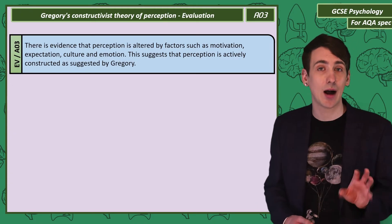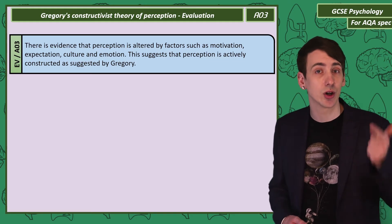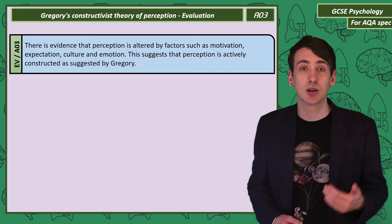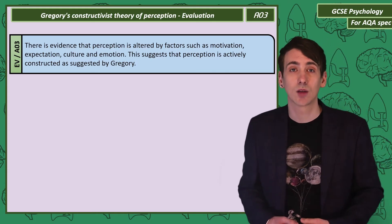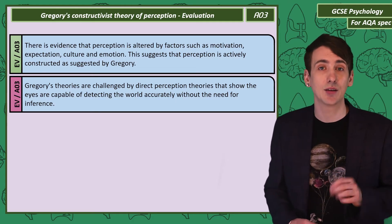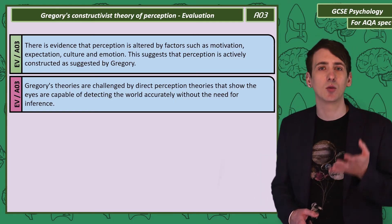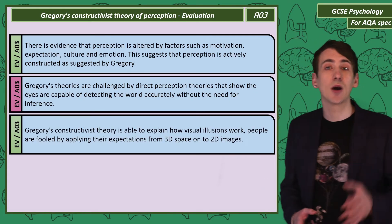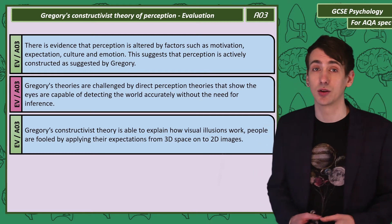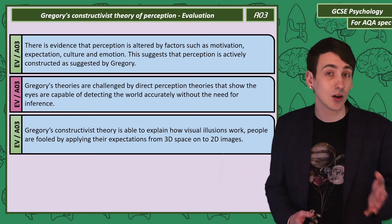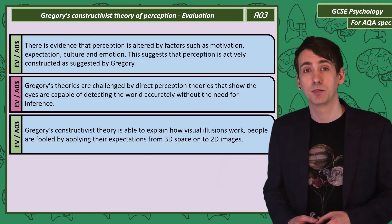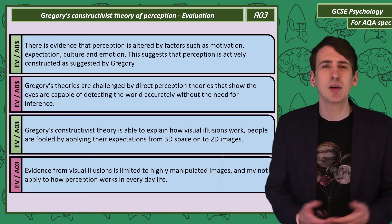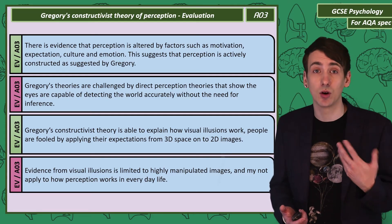We'll look in the next video about how perception is altered by expectation, culture and emotion. All of these factors support Gregory's idea that perception is actively constructed. But there is an alternate theory of perception that suggests the eyes are actually able to detect the world accurately, without the need for inferences. Another advantage of Gregory's theory is it does provide an explanation for visual illusions — people make incorrect inferences from limited sensory information. But these visual illusions are unusual manipulated 2D images. They may not really apply to how we perceive the world in normal life.